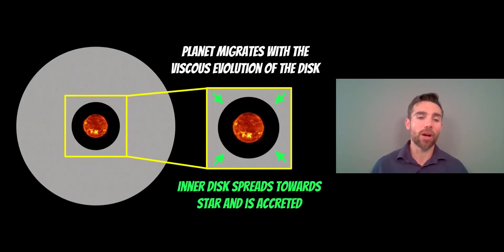How does it actually migrate in the disk now that we know that it creates a gap? The planet is going to migrate with the viscous evolution of the disk. It's a disk of gas and it viscously spreads. It spreads outwards and it spreads inwards. The inner part of the disk spreads towards the star and is then accreted, or it falls onto the star and the star continues to grow in size.